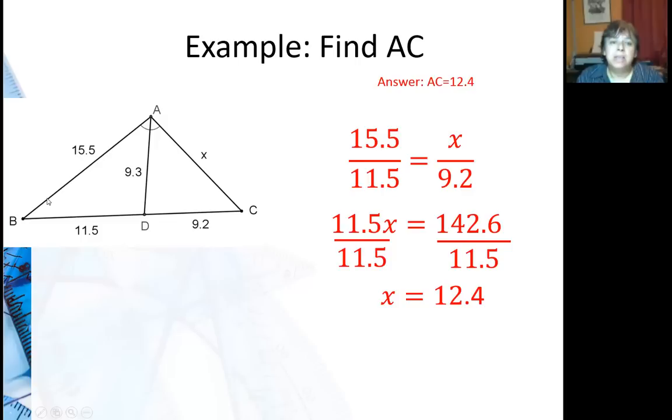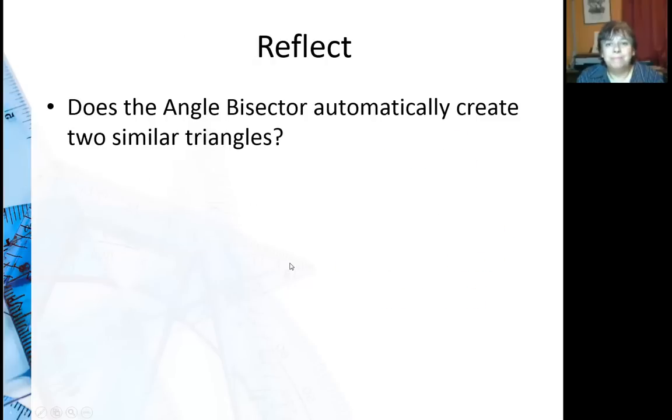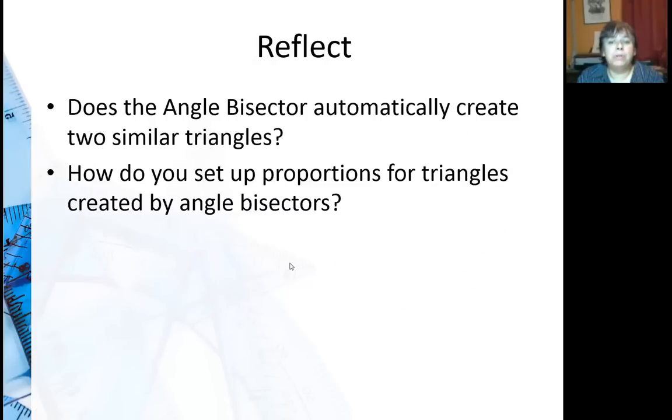It just says that this AB side, if I divide that by BD, that's equal to AC over DC. And then how do you set up proportions for triangles created by angle bisectors? Use the sides that are outside. Again, for all three theorems that we looked at today, we did not use any of the segments that were inside and the interior of the triangle.